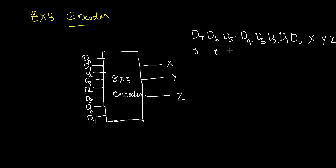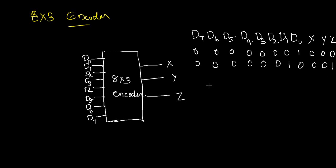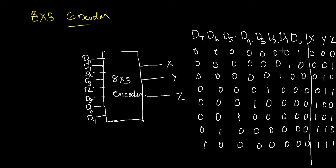When d0 is high, x, y, and z will all be 0, giving output 000. When d1 is high, the output is 001. When d2 is high, the output is 010. When d3 is high, the output is 011. This pattern continues up to d7, where the output will be 111.